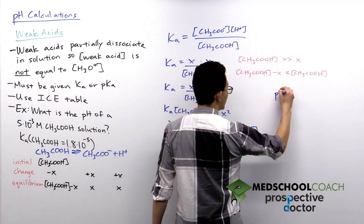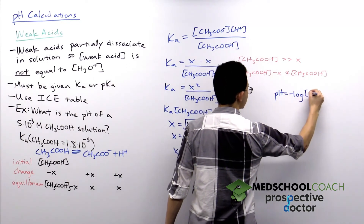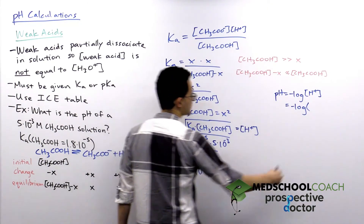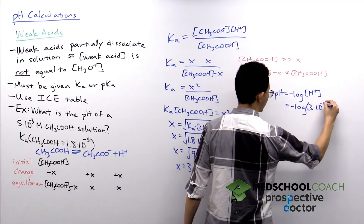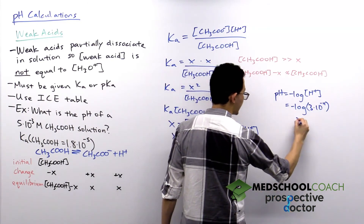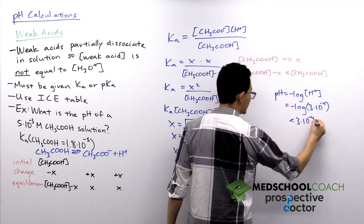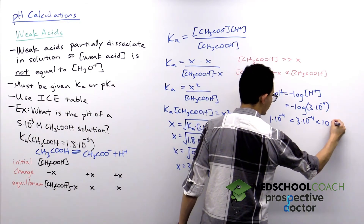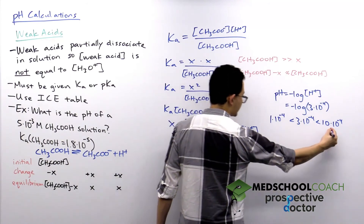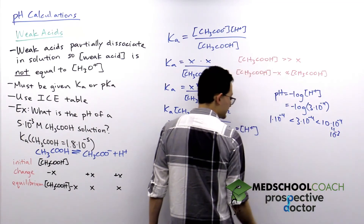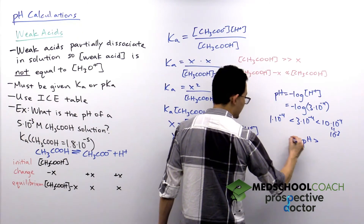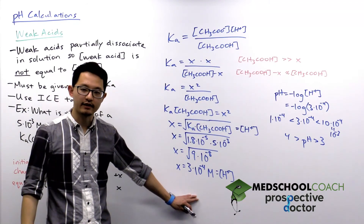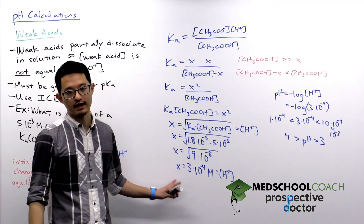Finally, we calculate pH = −log([H⁺]) = −log(3 × 10⁻⁴). Using our shortcut, 3 × 10⁻⁴ is between 1 × 10⁻⁴ and 10 × 10⁻⁴ (which is 10⁻³), so the pH is between 3 and 4. That's how you do the pH calculation of a weak acid using the ICE table.